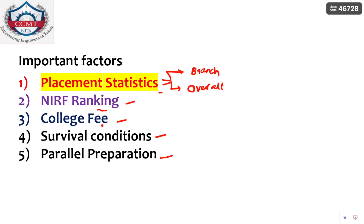The next factor is college fee. College fees vary from college to college and also differ by category — for example, OBC and SC/ST students have different fee structures at different NITs. Please go through the fee structure carefully, because if you make a priority list without checking and you get that college, you will have to pay that fee.